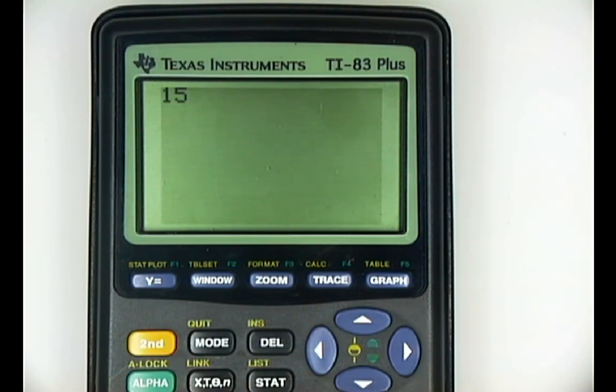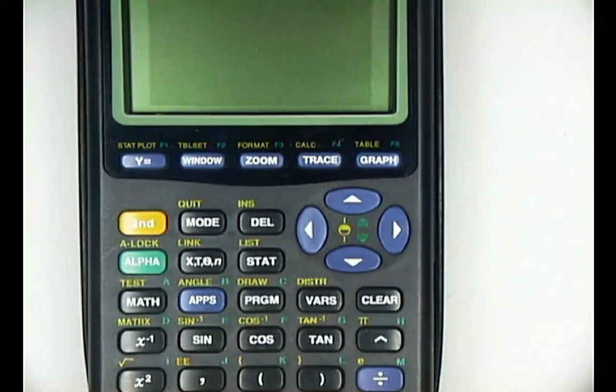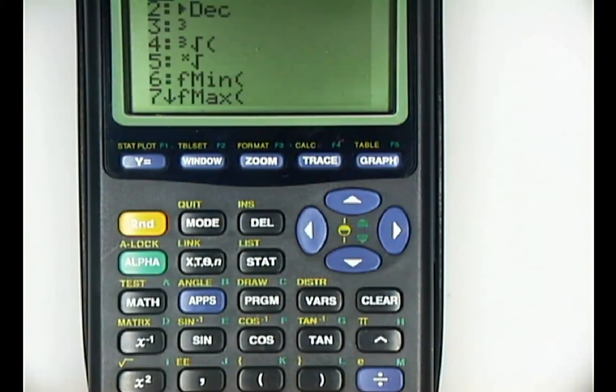You want to enter the n value, the total, 15. Then you want to find your MATH key, which is below the alpha key. Select that.